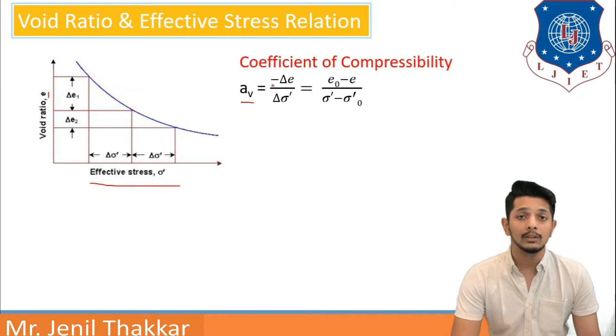We should be having question like this. But it is shown as negative sign due to the graph. Whenever effective stress will increase, the graph will go down, void ratio will decrease. That is why minus sign is shown.